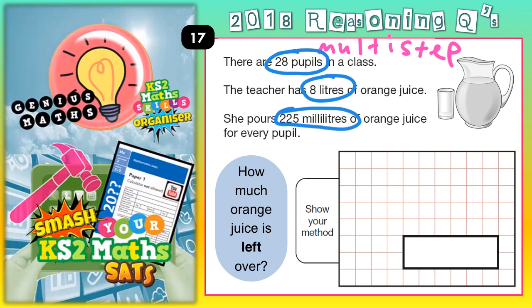If each pupil gets 225 millilitres and there are 28 pupils, we need to do 28 lots of 225. That will be the total amount of orange juice that she is pouring out. So let's work that out first: 225 multiplied by 28, using the magic zero method.